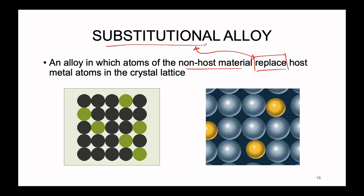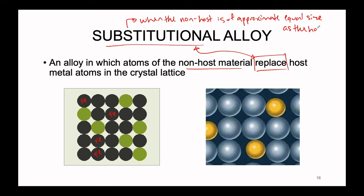We can see a couple of different illustrations of what this atomically could look like. If this hypothetically were the iron structure, iron is the host — we can see there is a majority of gray atoms and the green ones are in the minority. We will make a substitutional alloy when the non-host is of approximately equal size as the host. So if the atoms are approximately the same size, it stands to reason that we're just going to swap one for the other. This would be like the addition of chromium into iron — we would assume chromium and iron are going to have approximately similar sizes because they are nearby each other on the periodic table.